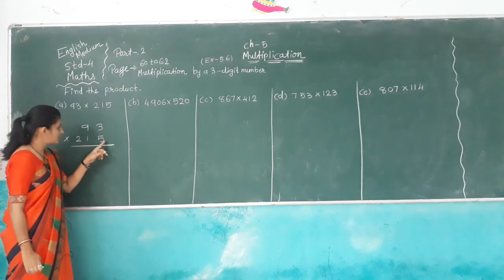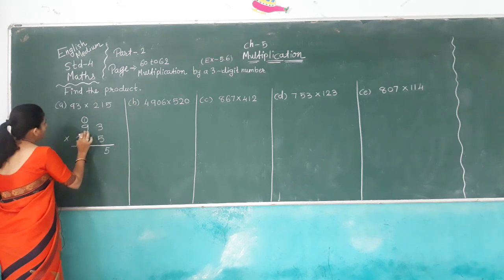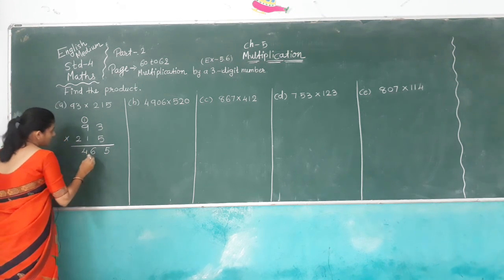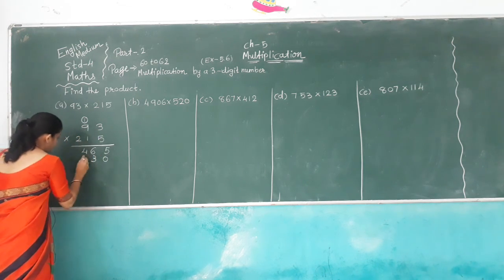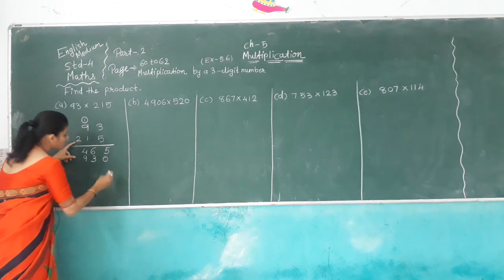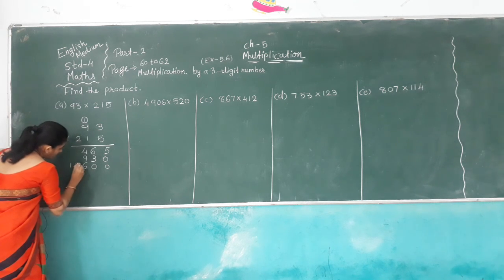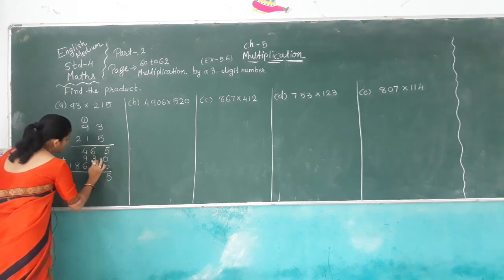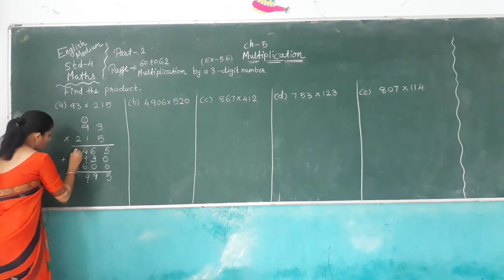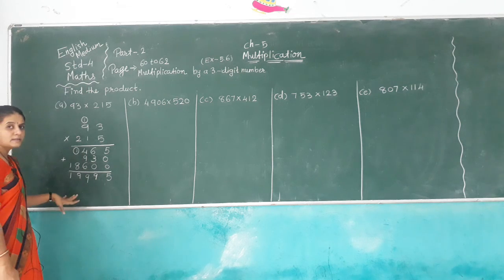Starting with the ones place: 5 times 3 is 15, carry over 1. 9 times 5 is 45, plus 1 is 46. Now we count the tens place: keep 1, 0. 3 times 1 is 3, 9 times 1 is 9. Then hundreds place: keep 2 zeros. 2 times 3 is 6, 2 times 9 is 18. Now add all numbers: 5 plus 0 plus 0 is 5, 6 plus 3 is 9, 6 plus 4 plus 9 gives carry. 8 plus 1 is 9, and 1. Here we get answer 19,925.